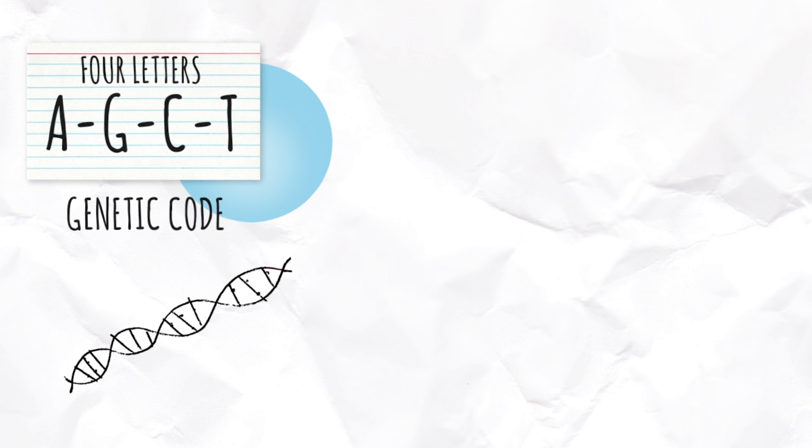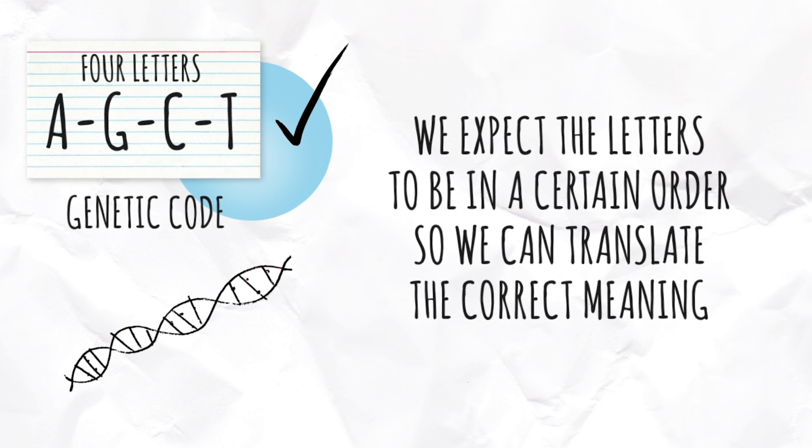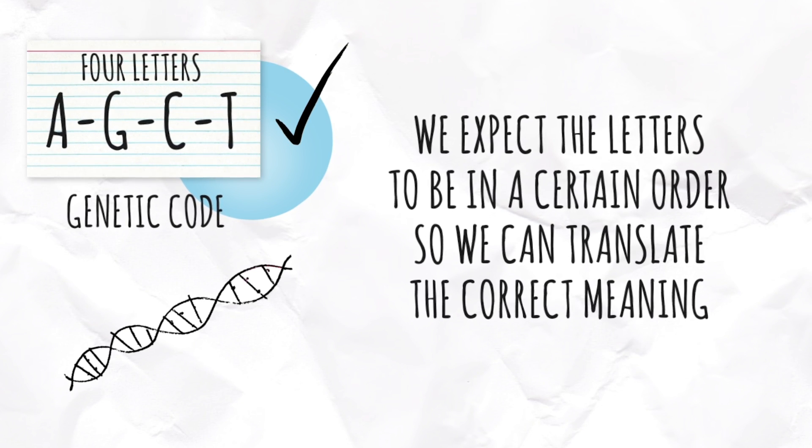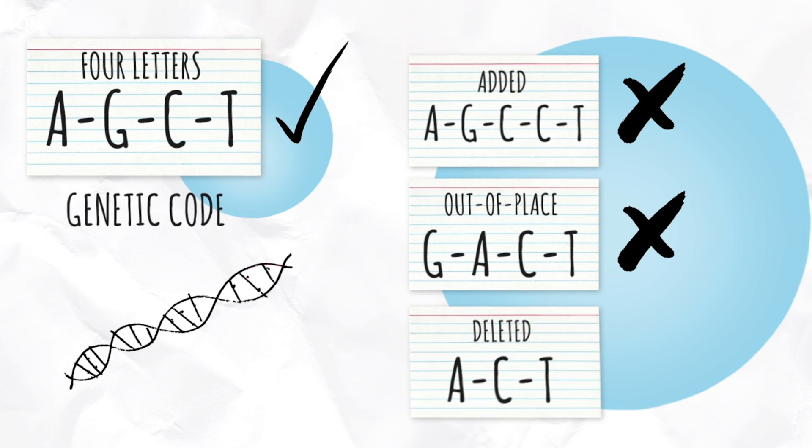These four letters create the genetic code. In our written language, we expect the letters in words to be in a certain order for our brains to translate the correct meaning. If a letter is added, out of place, or deleted, the word itself may not be understood.